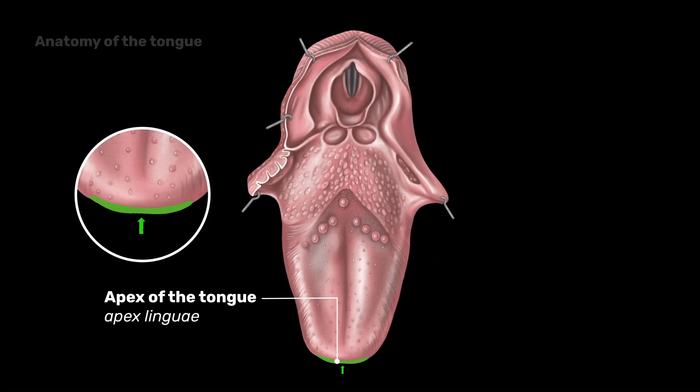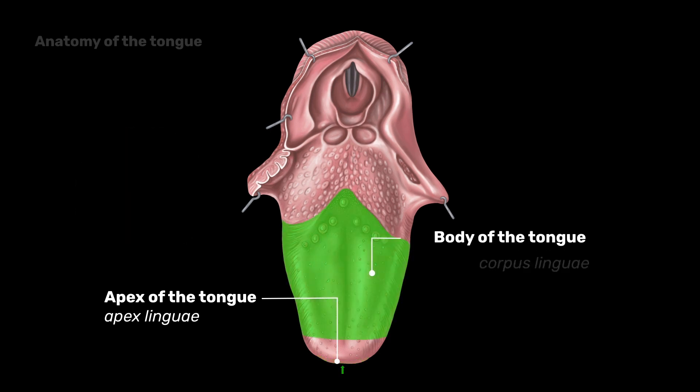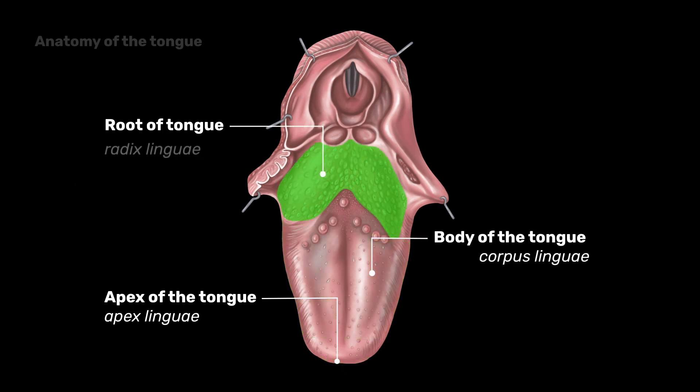The tongue has the following parts: the apex, the body, and the root or base.